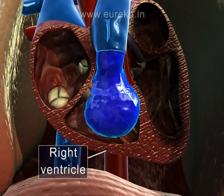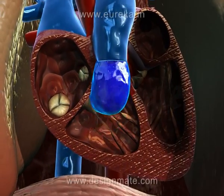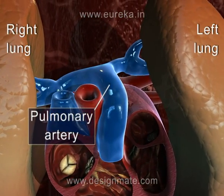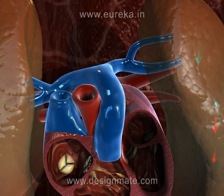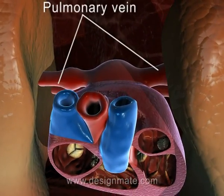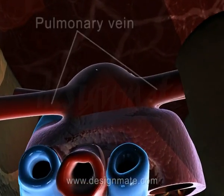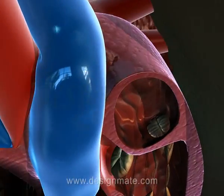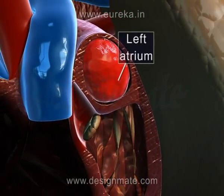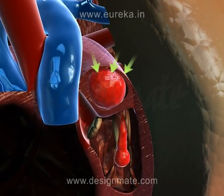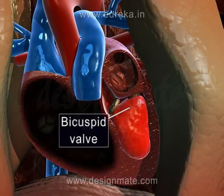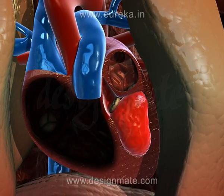The right ventricle contracts to push the blood into the pulmonary arteries, which carries the blood to the lungs. The pulmonary vein brings back the oxygenated blood into the left atrium of the heart. During atrial contraction, the blood passes through the bicuspid valve into the left ventricle.